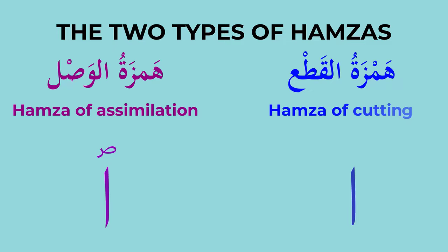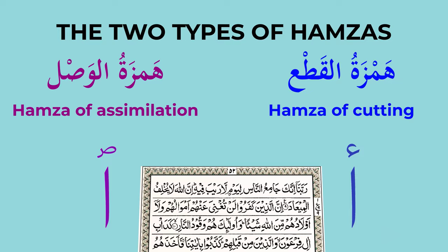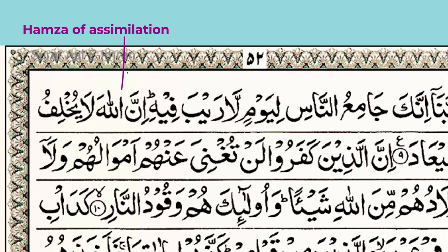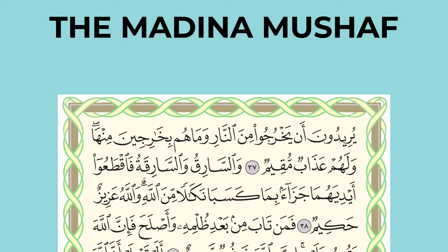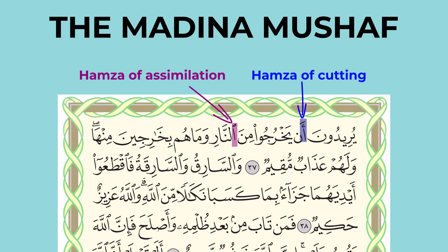In the Quran which are printed in India and Pakistan, they do not differentiate between these two. But the Quran which are printed in the Middle East, the Hamzas are clearly identified. I think it is extremely important that we should follow the method coming from the Middle East, because Arabic is their language and they know it.